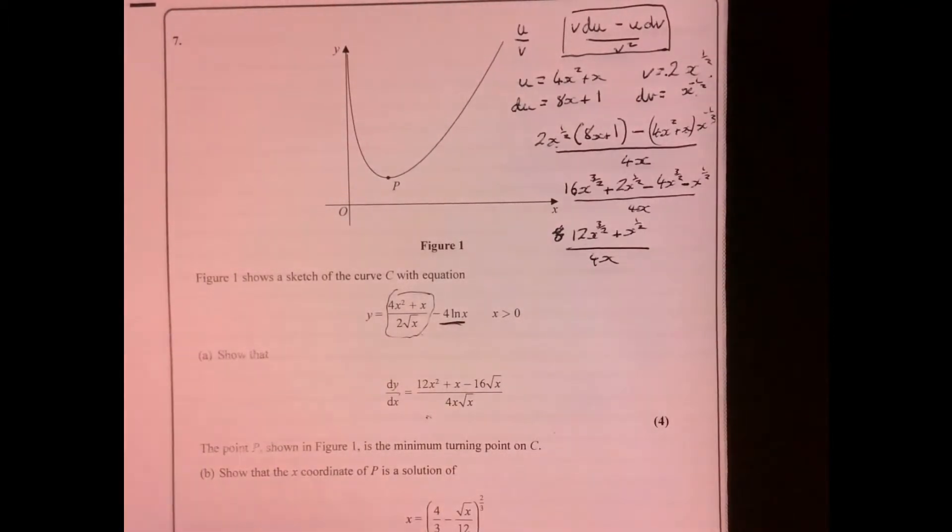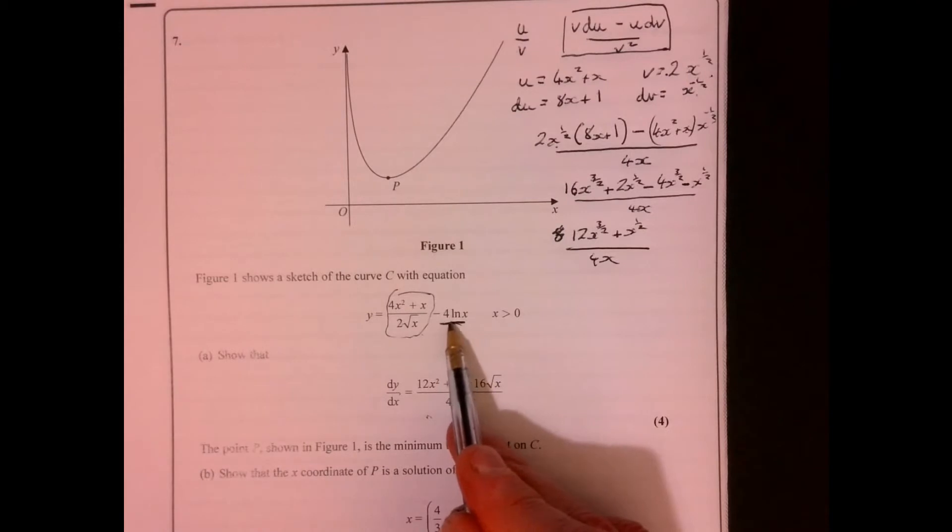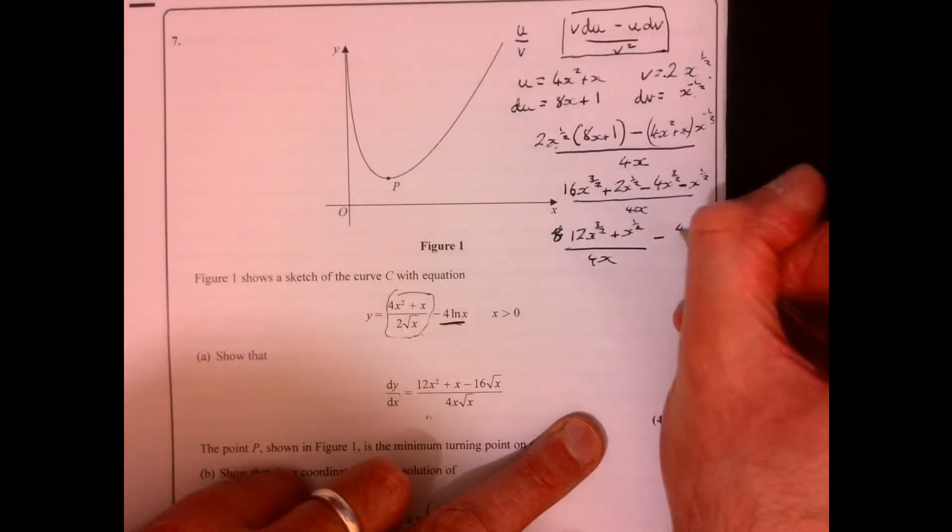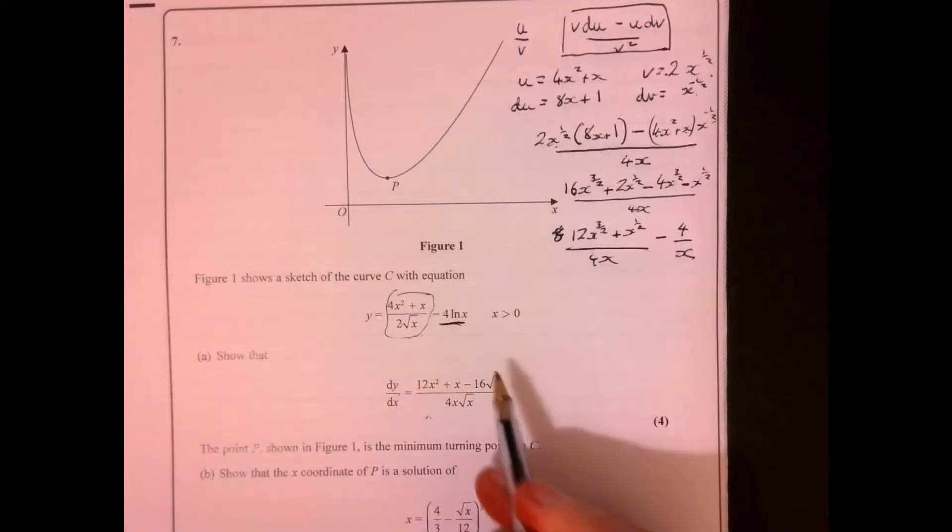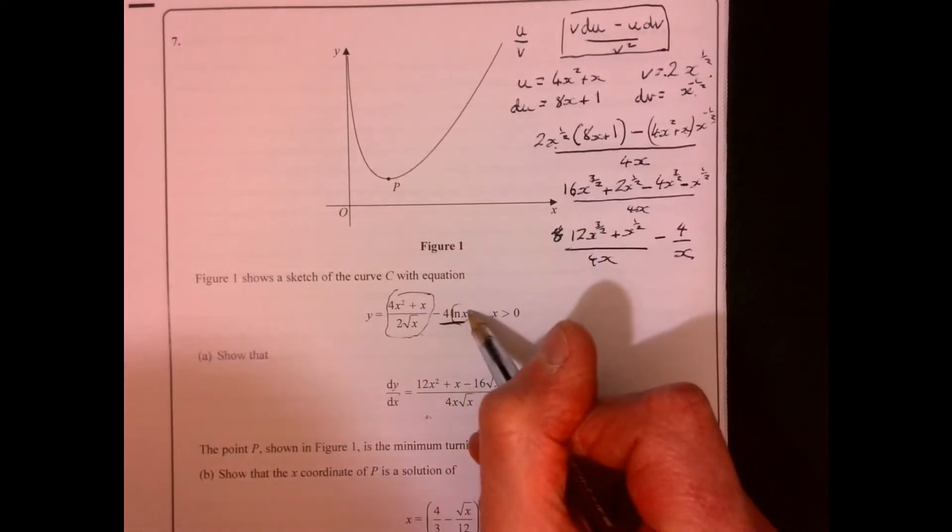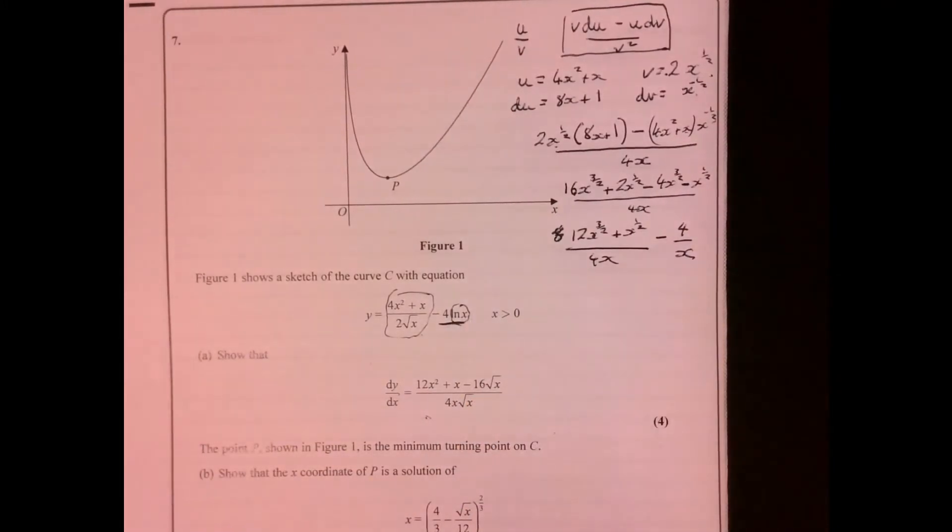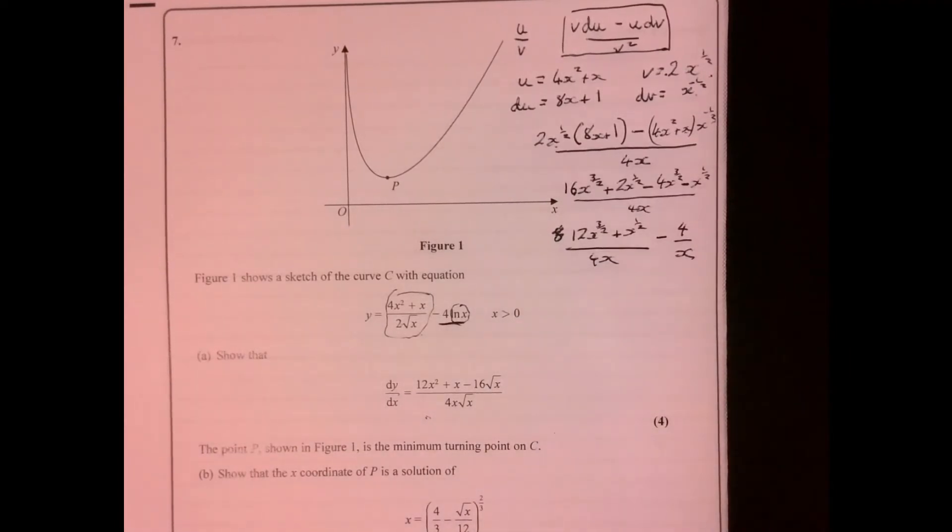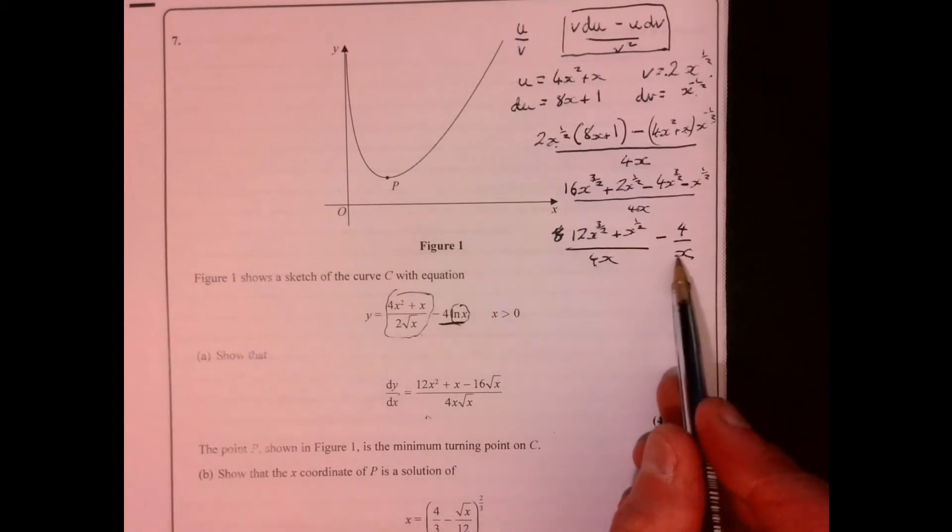Now the bit that I've forgotten about is then we've got minus 4 ln x. Well, if we differentiate minus 4 ln x, that gives us minus 4 over x. When you differentiate ln x, that gives you 1 over x.